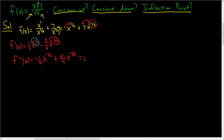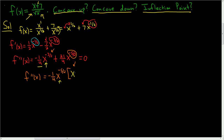We set this equal to zero. The trick is to factor out x to the smallest power. Negative five-halves is smaller than negative three-halves, so we'll factor that out along with the negative one-fourth. So negative one-fourth x to the negative five-halves. What goes in the bracket? For the x to the negative three-halves term, we need x to the two-halves, because two-halves plus negative five-halves is negative three-halves.